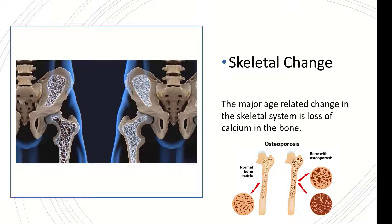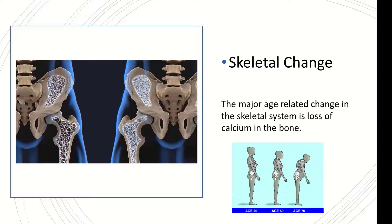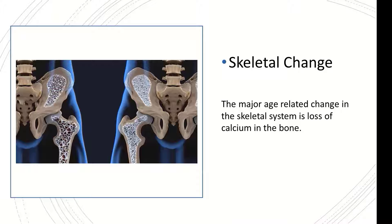The major age-related change in the skeletal system is the loss of calcium in the bone. There are many factors that equate to calcium loss in the bone, but the major factor is the simple process of aging. It is often difficult to think of the bone as dynamic rather than static, but we are constantly changing our skeleton — every 10 years we change out the entire skeletal system through a process of creation of new bone and reabsorption of old bone.